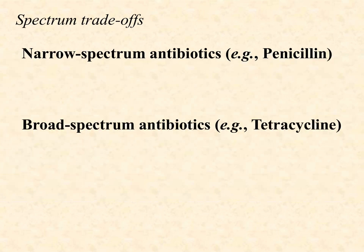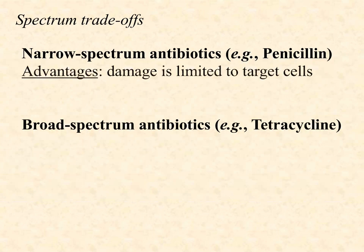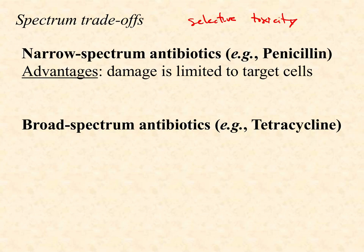Okay, assuming you paused and thought this through — let's start with our narrow spectrum antibiotics like penicillin. The real advantage to a narrow spectrum drug is that the damage is limited to the target cells. Remember we talked about selective toxicity in the last video. These chemicals by nature have to be toxic, but the more selective they are, the less damage they do both to the host — the patient — as well as to other bacteria that are providing some real important services to the patient.